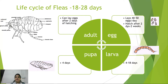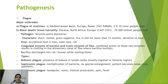Fleas lay 40–50 eggs per day; larval development takes 4–18 days and pupae take 4 days to emerge. Plague has caused major historical outbreaks, including the Plague of Justinian in the Mediterranean basin where 100 million people died, and the Black Death in 1347–1351 in Europe and Eurasia where 200 million people died.